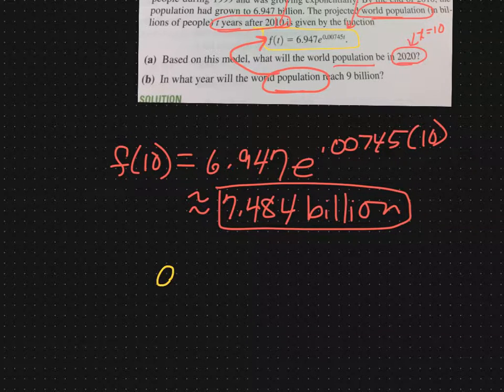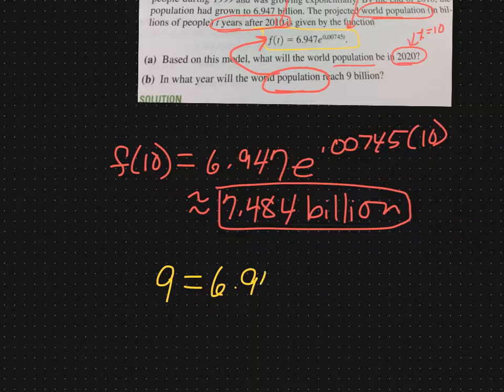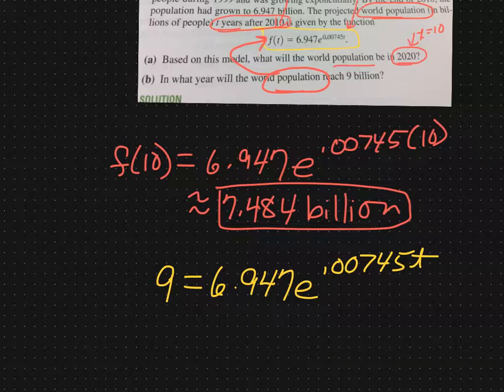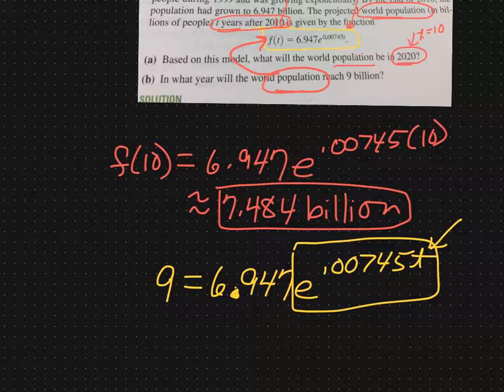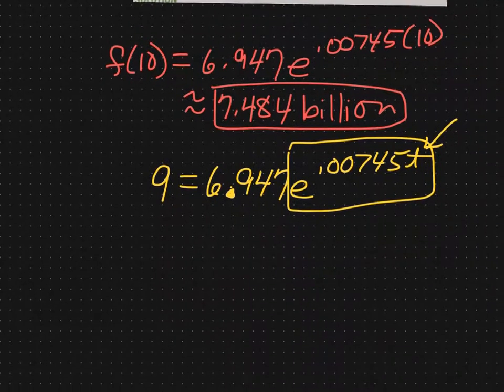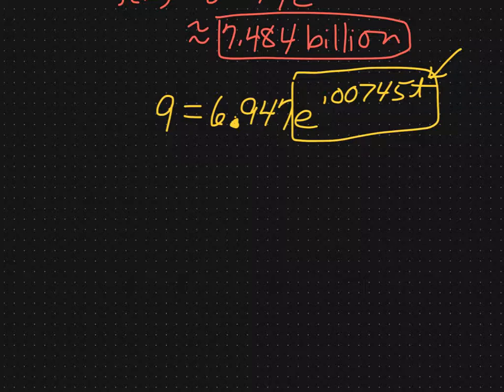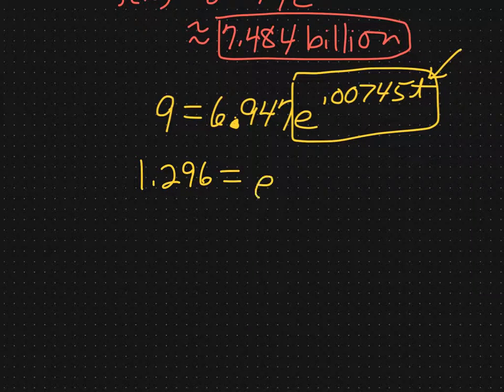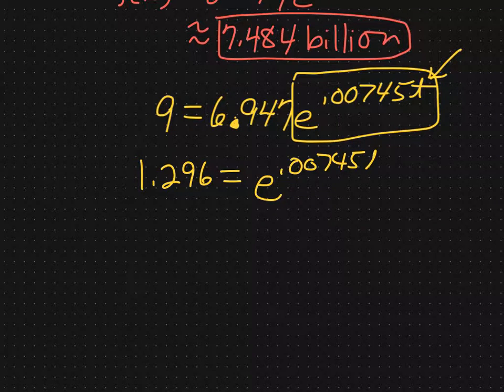If we do that, 9 in for f(t) would give me 9 equal to 6.947e to the .00745 times t, which is an exponential equation because my exponent is a variable. We know from previous sections that the first thing that we want to do is isolate the exponential part. We're going to divide both sides by 6.947. If you do that, you'll end up with 1.296 equal to e to the .00745t.